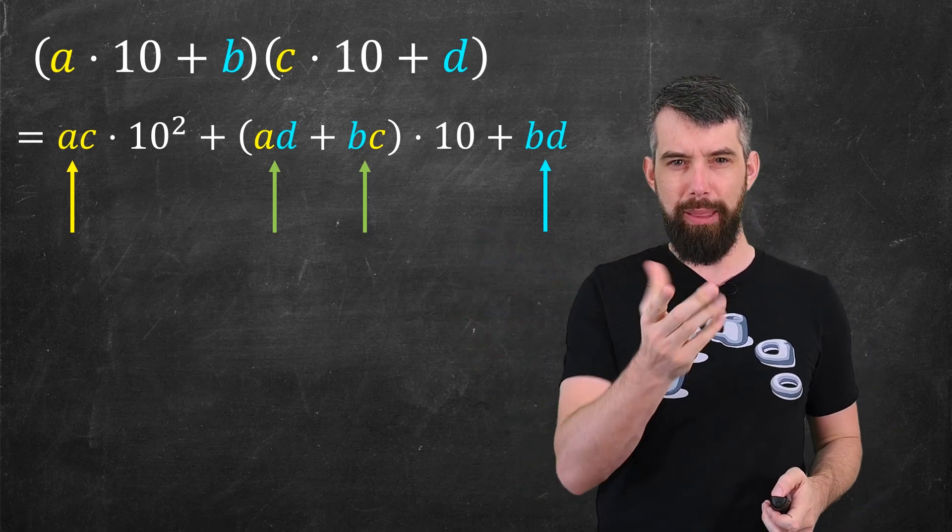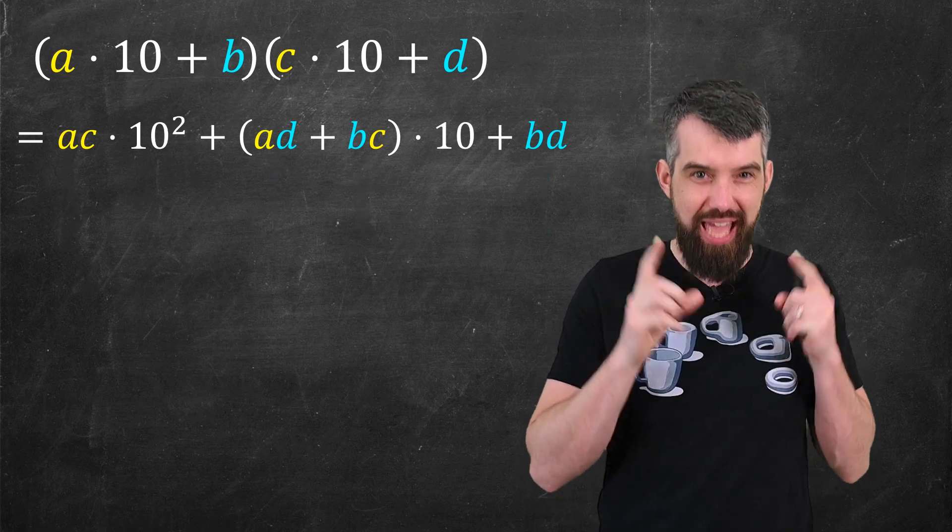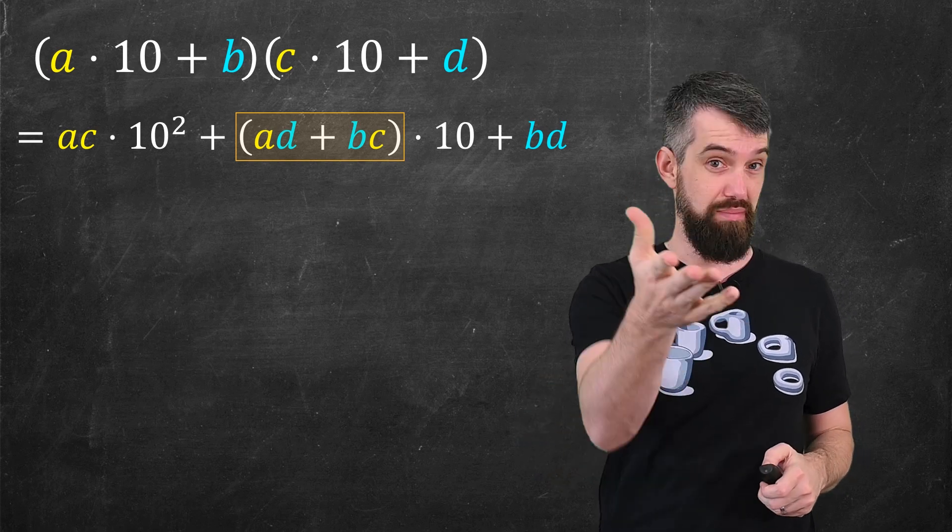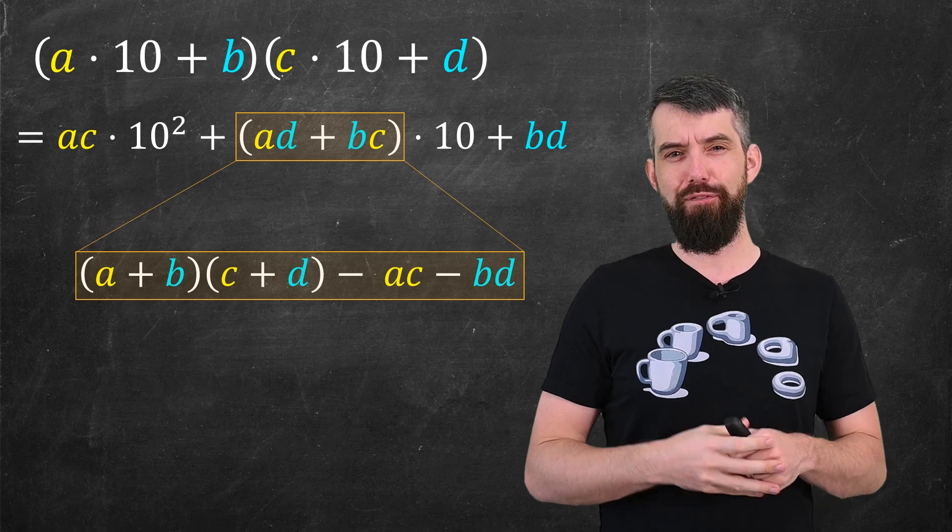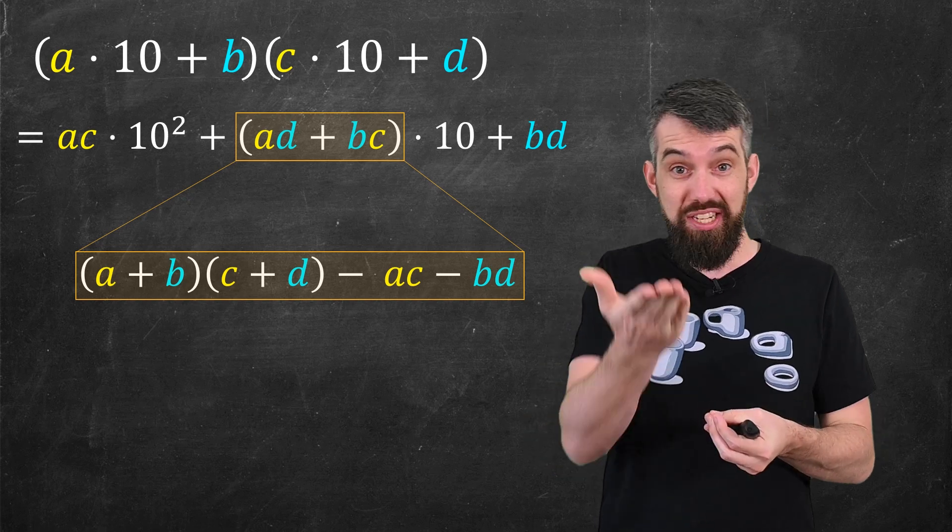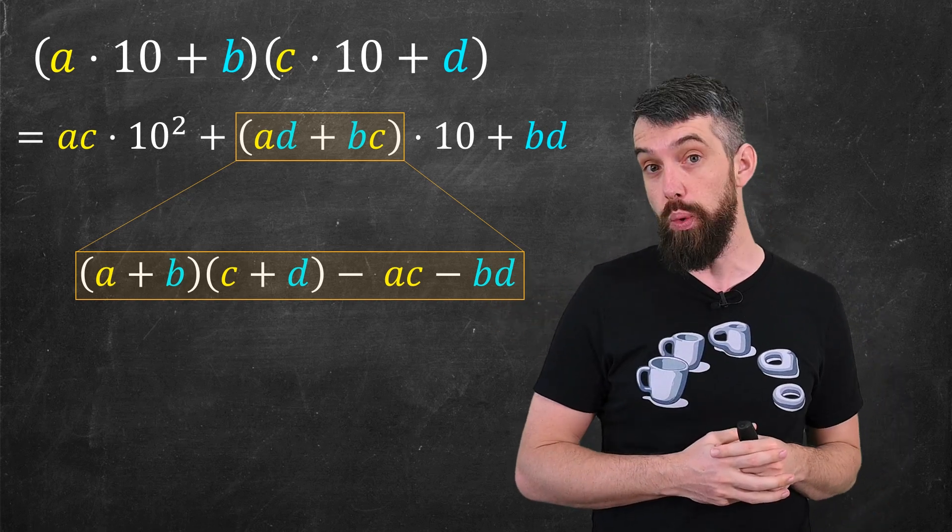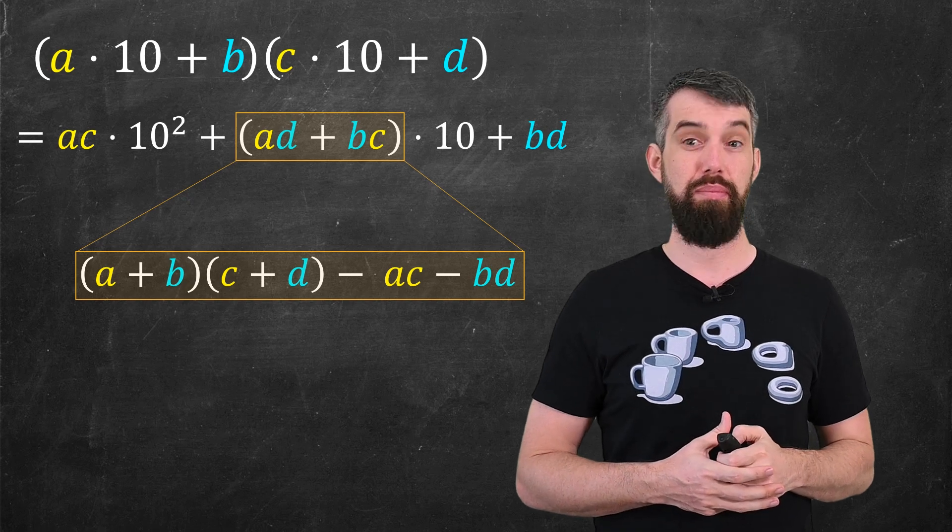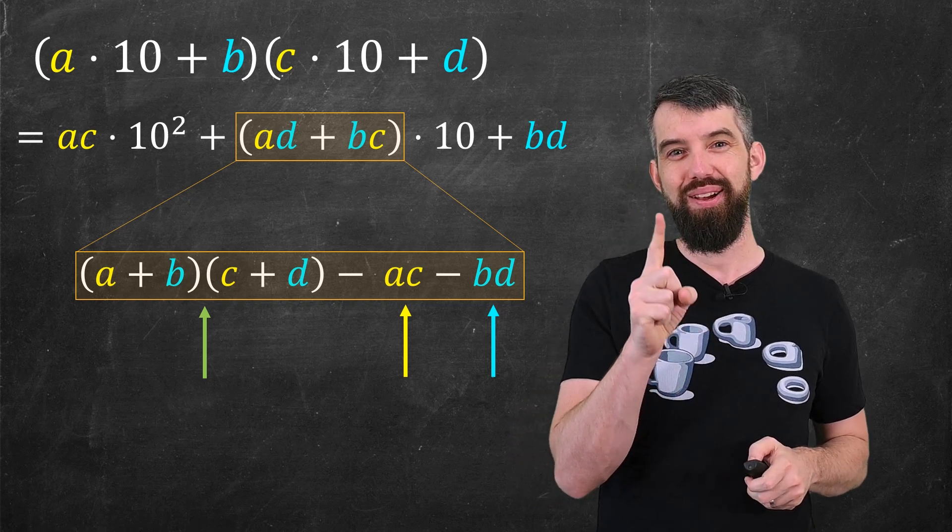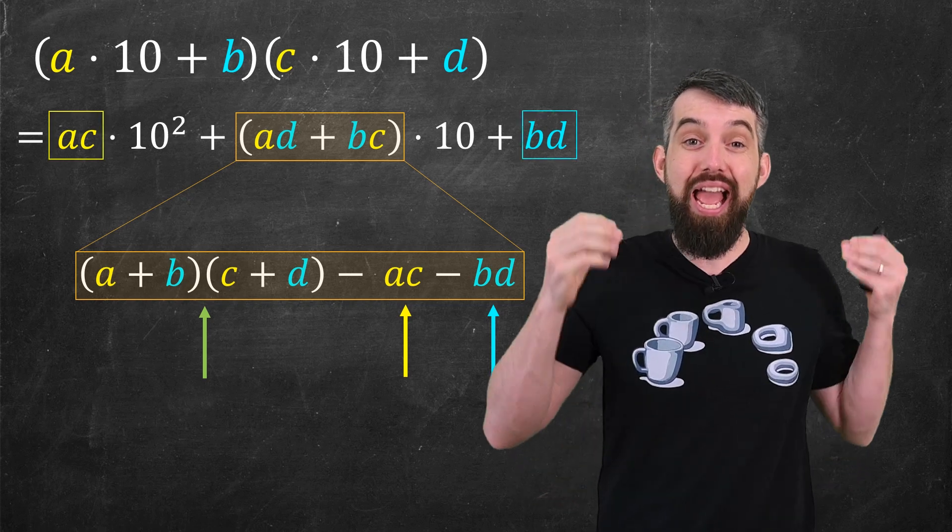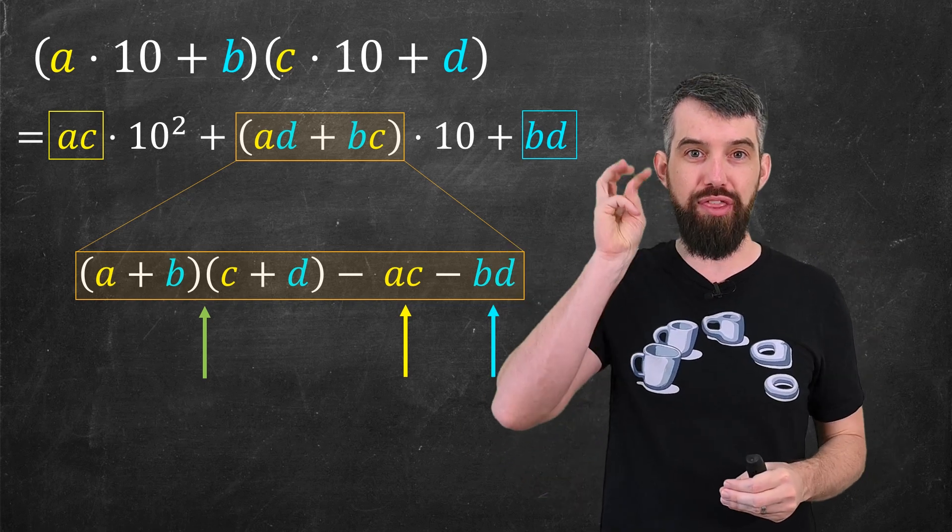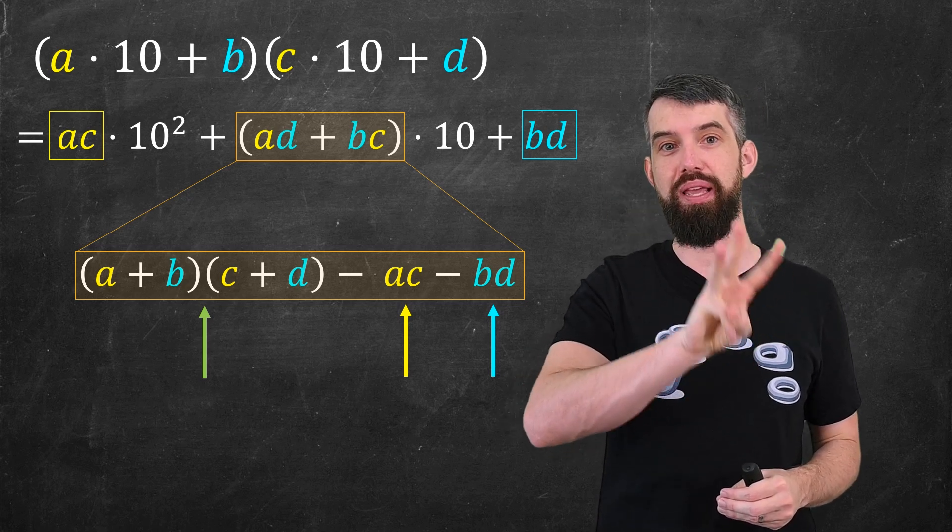But now I'm going to do a trick. Let me look at that middle term, that 10 term, the ad plus bc times 10 term. I'm going to replace these two multiplications by one multiplication. It's just a little bit of algebra. If I expand out a plus b times c plus d I get terms like ac and bd, and so I just subtract them off and these two things are equal. But now I notice that ab plus cd, well there's one multiplication there, and then there's two more ac and bd, but ac and bd are multiplications I have to do anyways. And so now I have a total of only three single digit multiplications that I need to do in this algorithm.